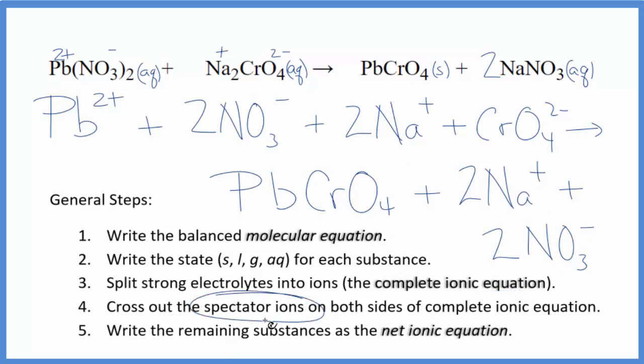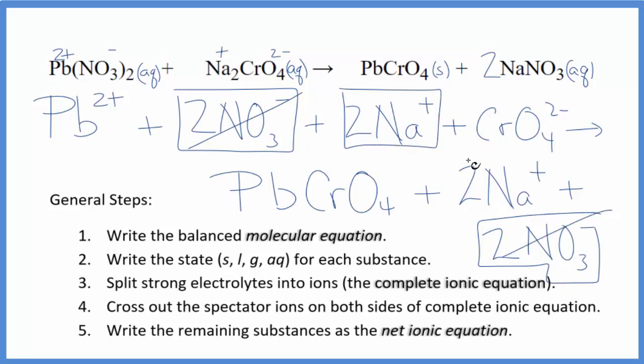Now we can cross out the spectator ions. They're on both sides. So when I look at the reactants here, I see the nitrate here. I have 2 of them here. And in the products. So these are spectator ions. Cross those out. Reactants in products. 2 nitrate ions right here. And in the products. Cross those out.